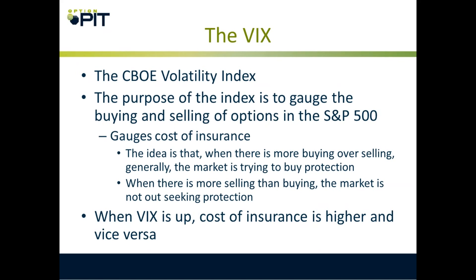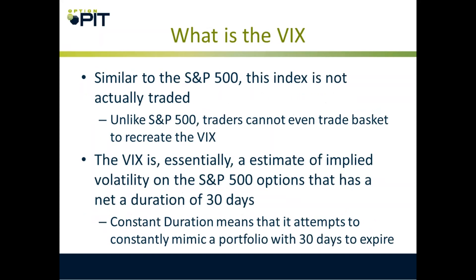Now let's talk about VIX. The VIX is the CBOE volatility index. The purpose of the index is to gauge the buying and selling of options in the S&P 500 and to gauge the cost of insurance — how much does it cost to insure your portfolio? When VIX is going up, there is more buying of options than selling. When it's dropping, there is more people selling options. VIX up means cost of insurance is higher, and vice versa. For instance, VIX was a lot higher today — people are worried about the election. If you don't want to dump your portfolio and you're worried about the election, you hedge with options, so VIX goes higher.